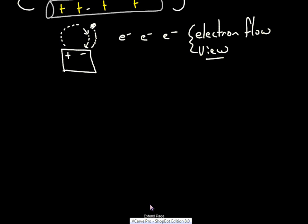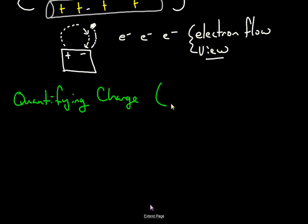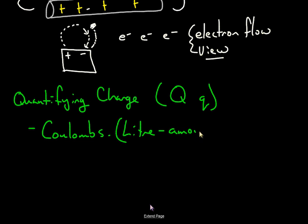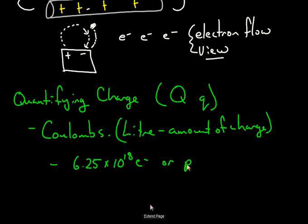So how do we quantify charge? The symbol in physics for charge is a big Q or a little q and is measured in coulombs. So what is a coulomb? Well, a coulomb is kind of like a liter if you want. Similar to a liter in that it is an amount of charge, an amount of charge or even like a mole if you want. It's an amount of something. So a coulomb is the amount of charge you would get from 6.25 times 10 to the 18 electrons or protons.